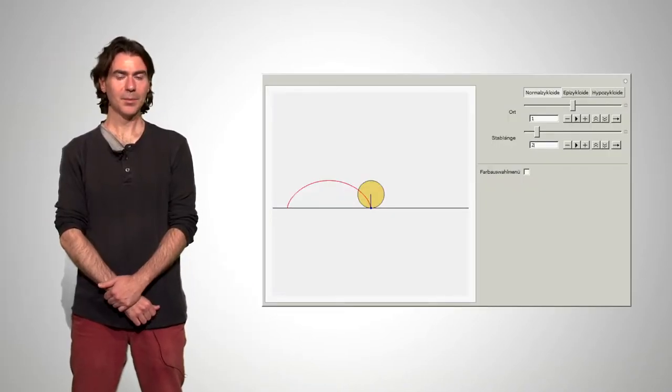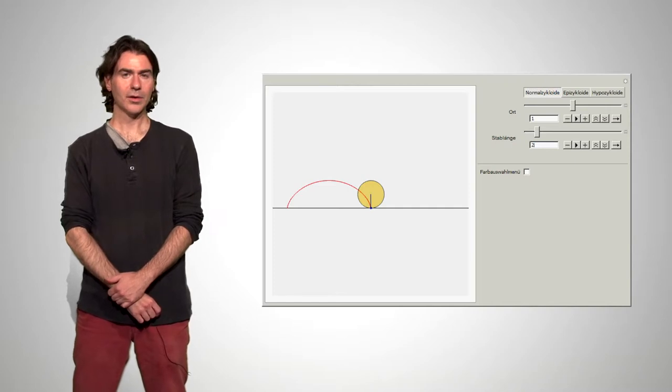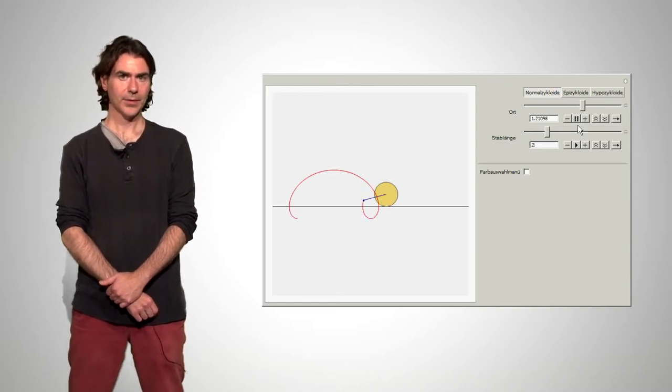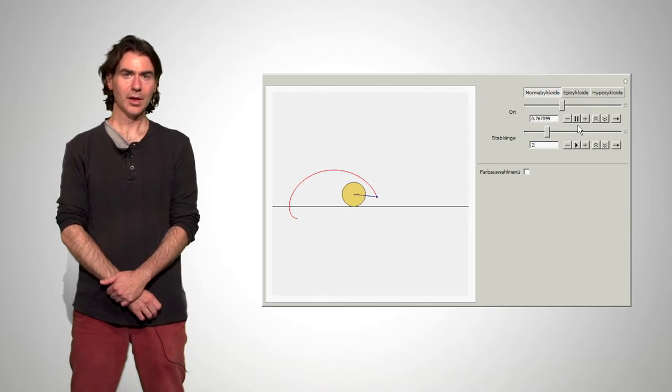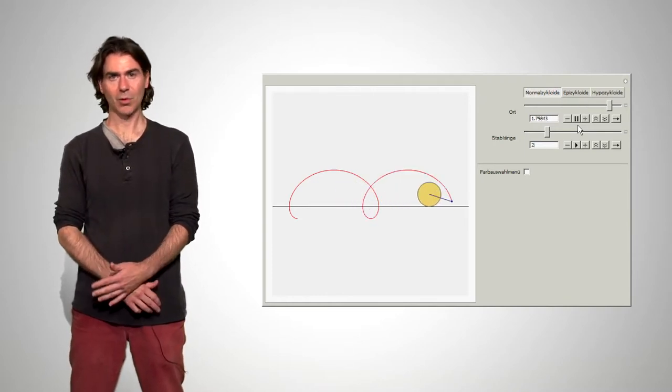Mathematically speaking, rp can also be bigger than r, which leads to a looping type effect. In reality, such a large protrusion would naturally be disruptive to a rolling motion.